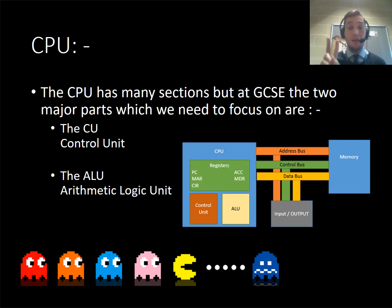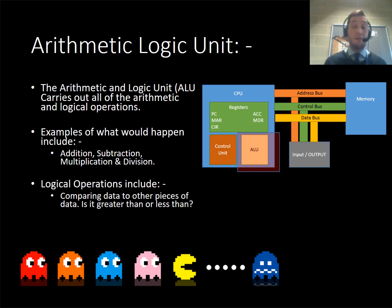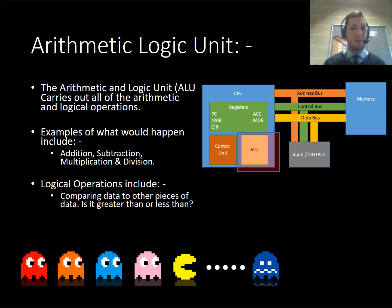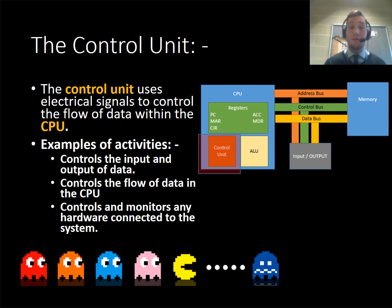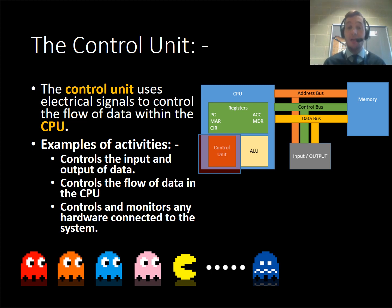The CPU has two main components: the control unit and the arithmetic logic unit (ALU). The ALU is easy to remember because of its name — arithmetic means maths, specifically addition, subtraction, multiplication and division. That's where all the maths happens, but also remember the word 'logic', because that's where all the comparing of data and logical comparisons are carried out. The control unit uses electronic signals to control the flow of data in the CPU, controlling input and output, and monitoring any connected hardware for any change in state so it can act on it.